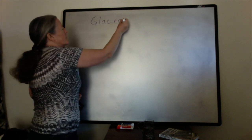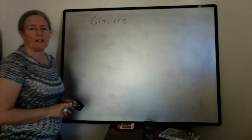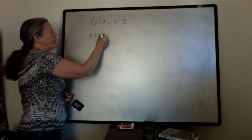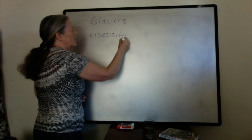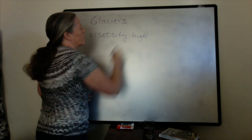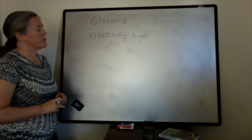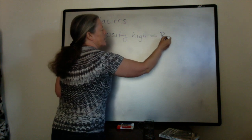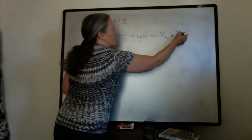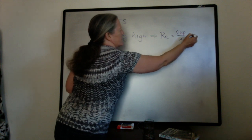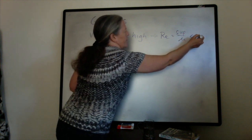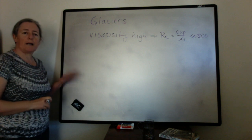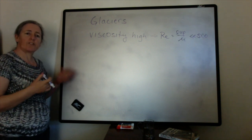One of the interesting things about ice is that the viscosity of ice is very high. It flows very, very slowly, and there's a lot of friction within the flow. That means that the Reynolds number — which is the flow depth, the flow speed, the density over the viscosity — is very, very low, well less than 500, which is our boundary between transitional and laminar flows.